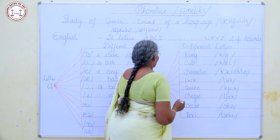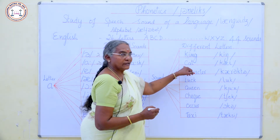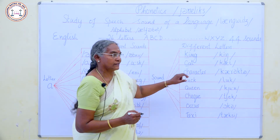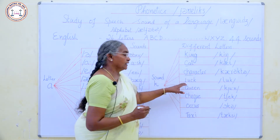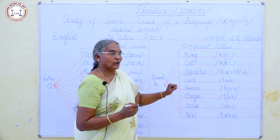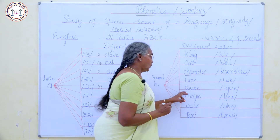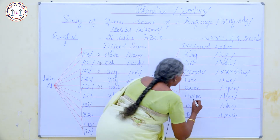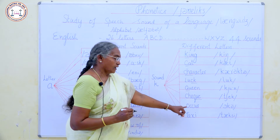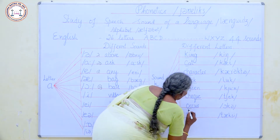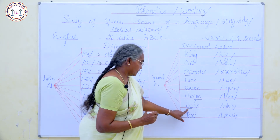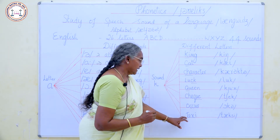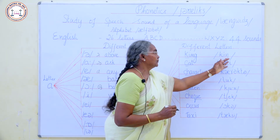In 'king', the letter K makes the K sound. In 'cat', the letter C is pronounced as K. In 'character', C-H-A is pronounced as K. In 'luck', C-K is pronounced as K. In 'queen', Q is pronounced as K. In 'check', Q-U-E is pronounced as K. In 'akkar', U-C is pronounced as K. In 'taxi', X is pronounced as K.